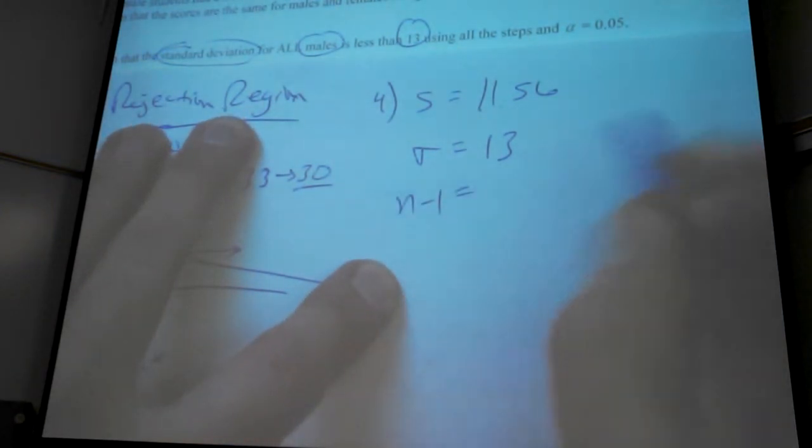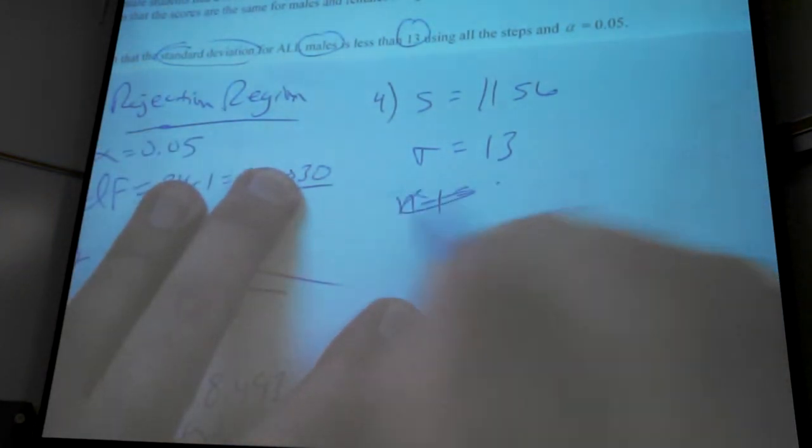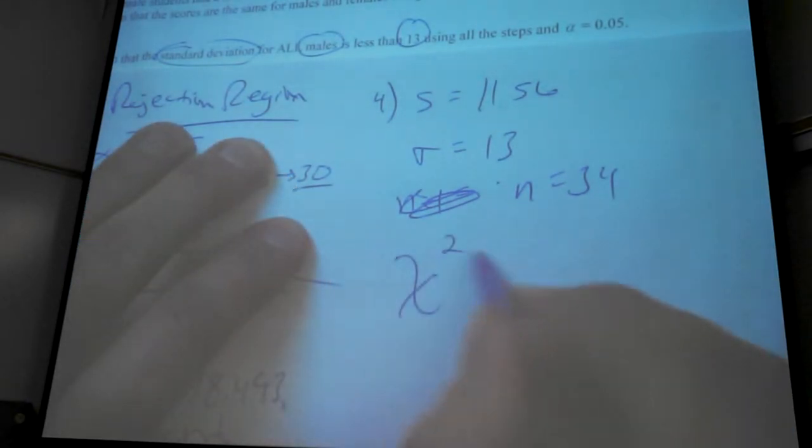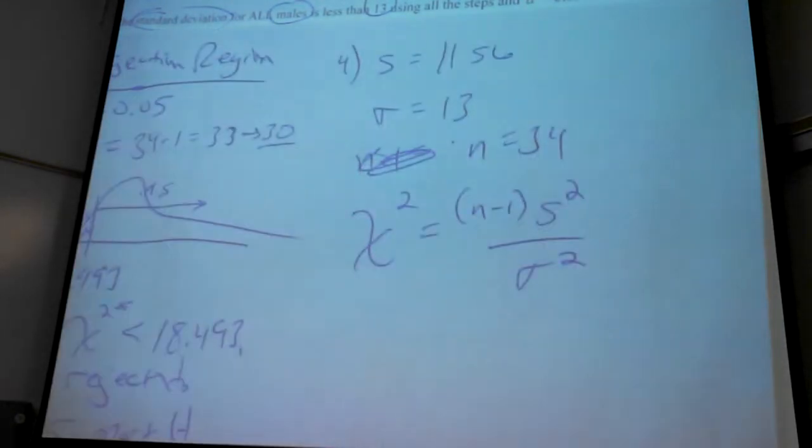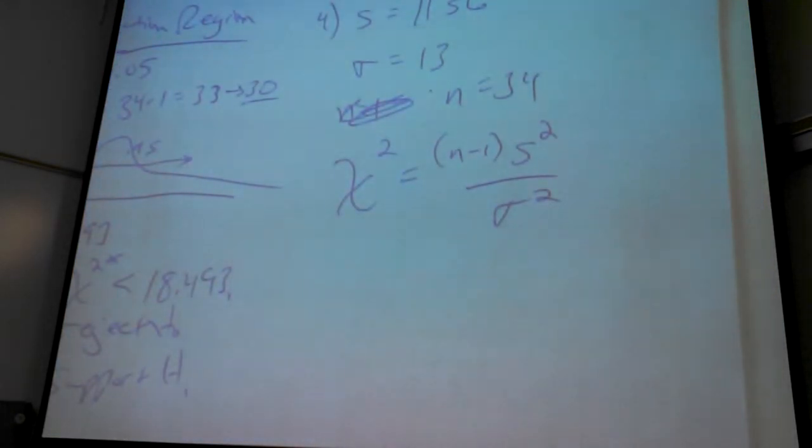And now I just got to throw those into the formula. Of course, N minus 1 again was 33. Let's just put N. N is 34. So the formula that you can have on your formula sheet, this little dude there, so now you know everything to plug in.